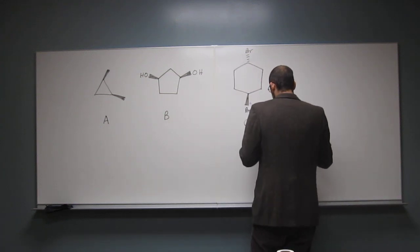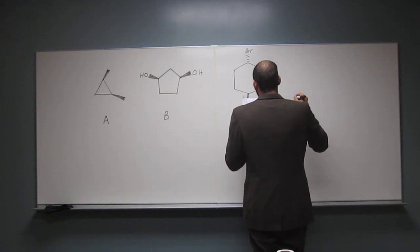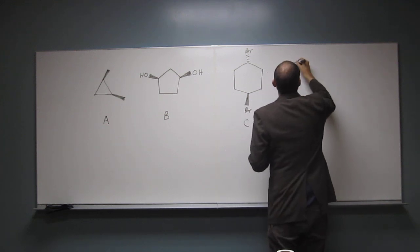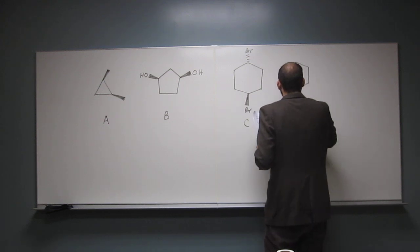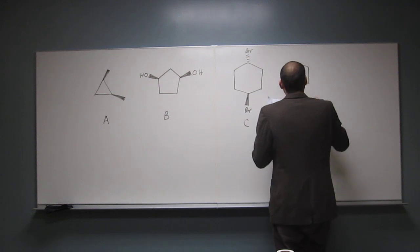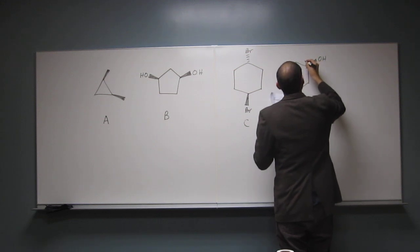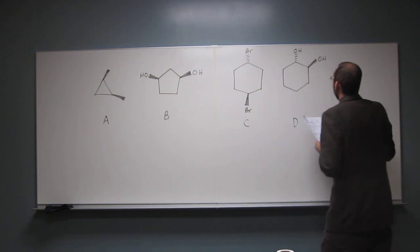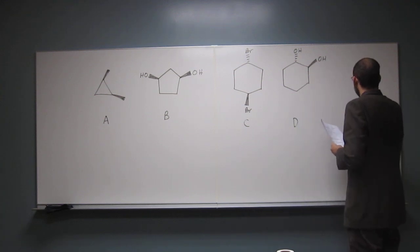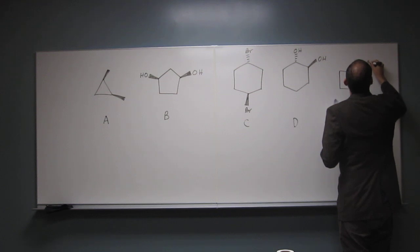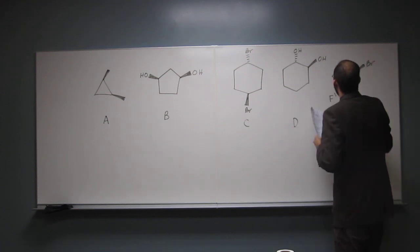So, cyclohexane and trans-1,4-dibromocyclohexane. Okay, so let's see. D is trans-1,2-dihydroxycyclohexane.